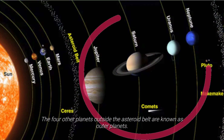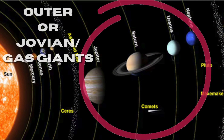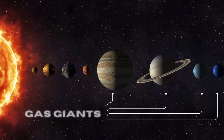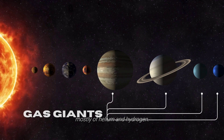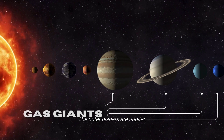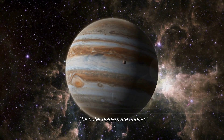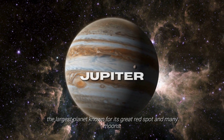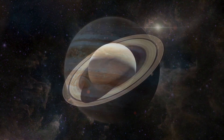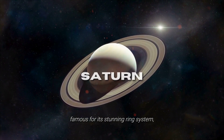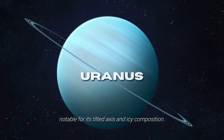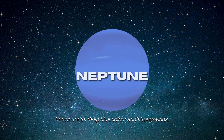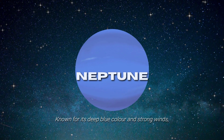The four other planets outside the asteroid belt are known as outer planets, also called Jovian or gas giants. Most of them are much larger than the terrestrial planets and have thick atmospheres, mostly of helium and hydrogen. The outer planets are: Jupiter, the largest planet, known for its great red spot and many moons; Saturn, famous for its stunning ring system; Uranus, notable for its tilted axis and icy composition; and Neptune, known for its deep blue color and strong winds.